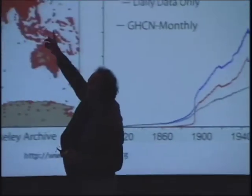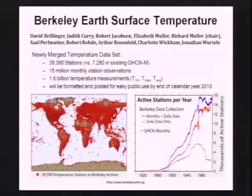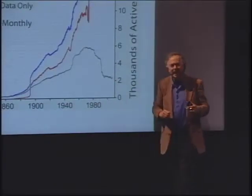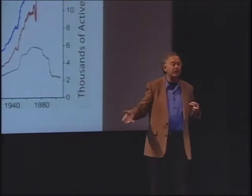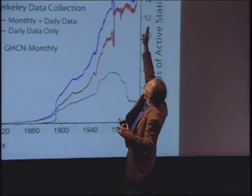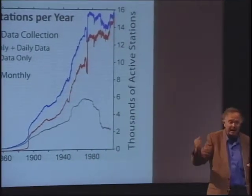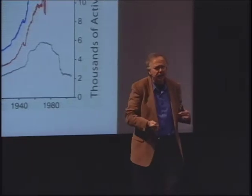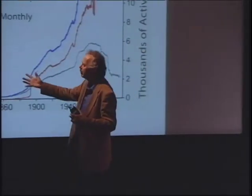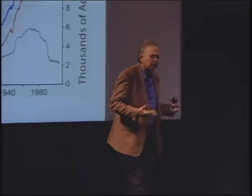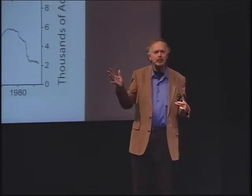We will do this with statistical methods that are completely transparent. These are the sites around the world where we have good data. If we look at what other people have done, this is the data as a function of time — how much data they actually used in their analysis. You notice the big drop-off. This is not a conspiracy. It is simply the fact that they use only the monthly data, and the amount of monthly data has dropped off recently because people stopped compiling it. The data available, shown in red and blue, is what we will be using. We're going to attempt to use every bit of data.